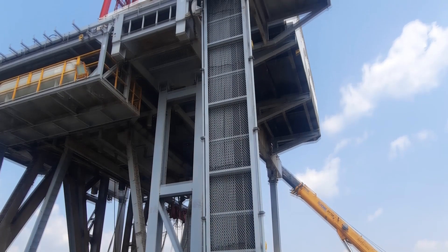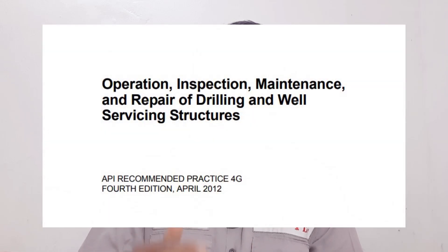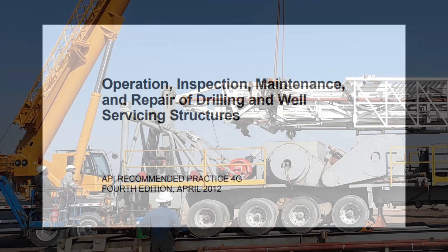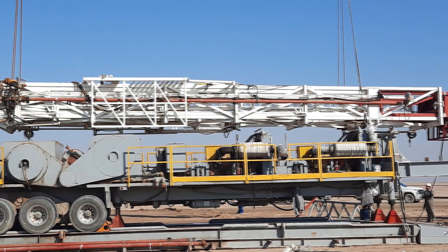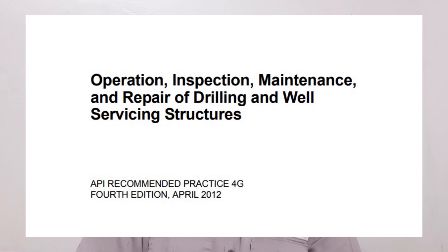First, I am going to discuss about drilling land rigs. In land rig or offshore rig, the drilling rig use, repair, maintenance, and inspection is under the section of API RP 4G. Usage, inspection, maintenance, and repair of drilling and well servicing structures is under API RP 4G. The design and manufacturing is API RP 4F.